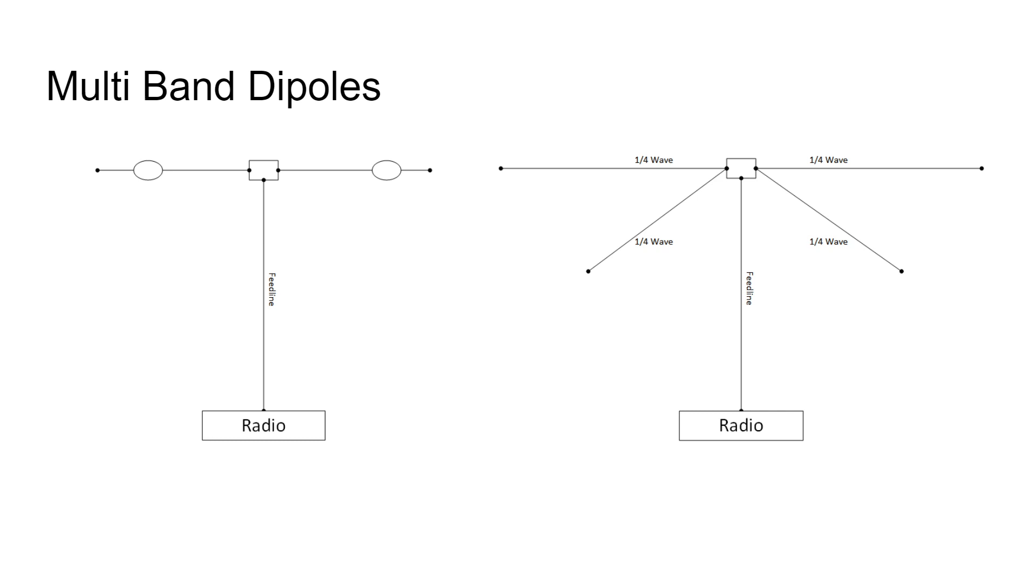On the right, what we have there is what's called a fan dipole. And that's when you add more than one set of radiating elements to your feed point. So in this example, you could have two elements that are on a 30-meter band and then two of them that are on a 20-meter band, for example. Or you could have 40 and 30 or any combination. And some people will actually add more than what we have here. So you'll see a fan dipole that can operate on, let's just say, 80, 60, 40, and 30.